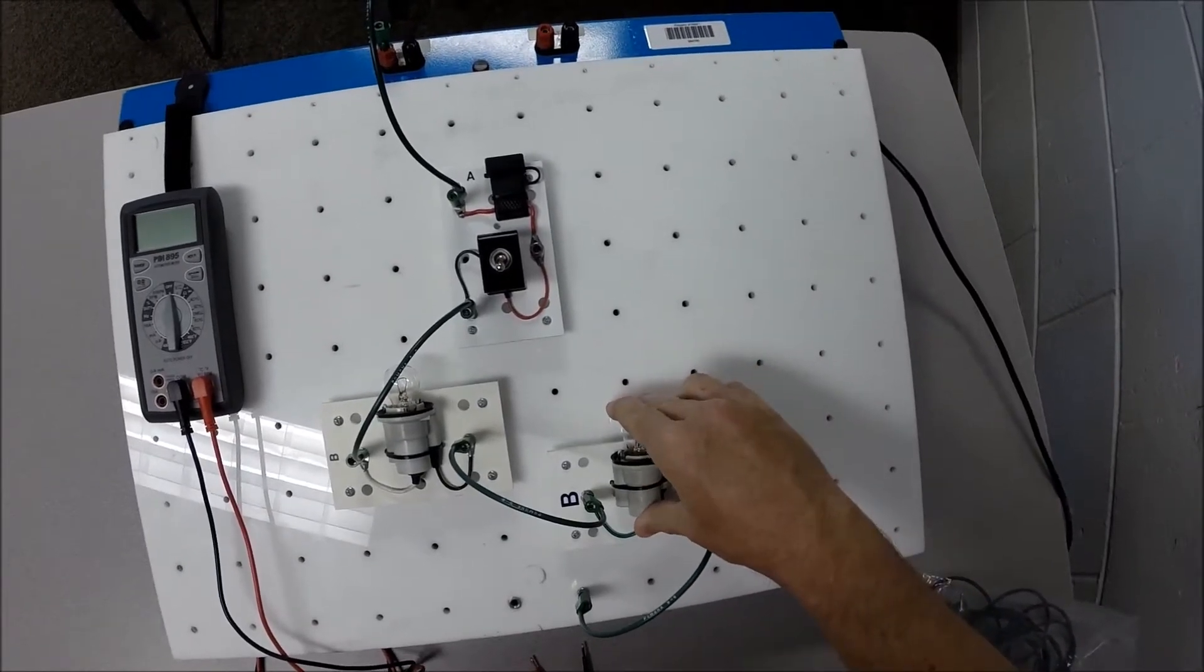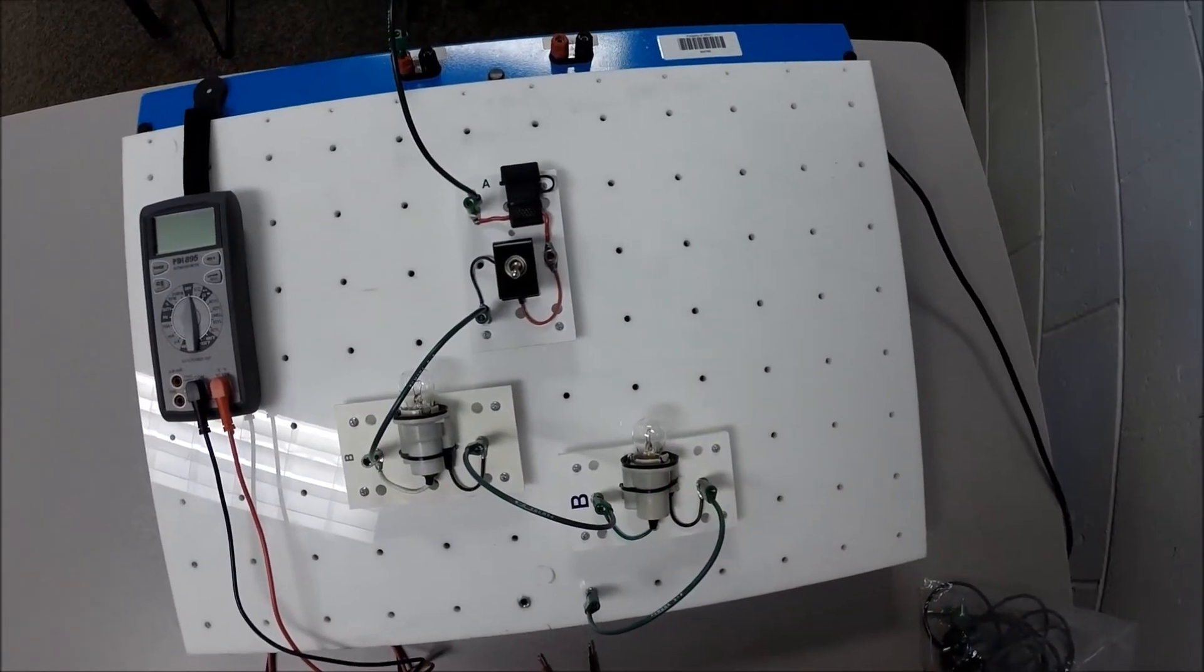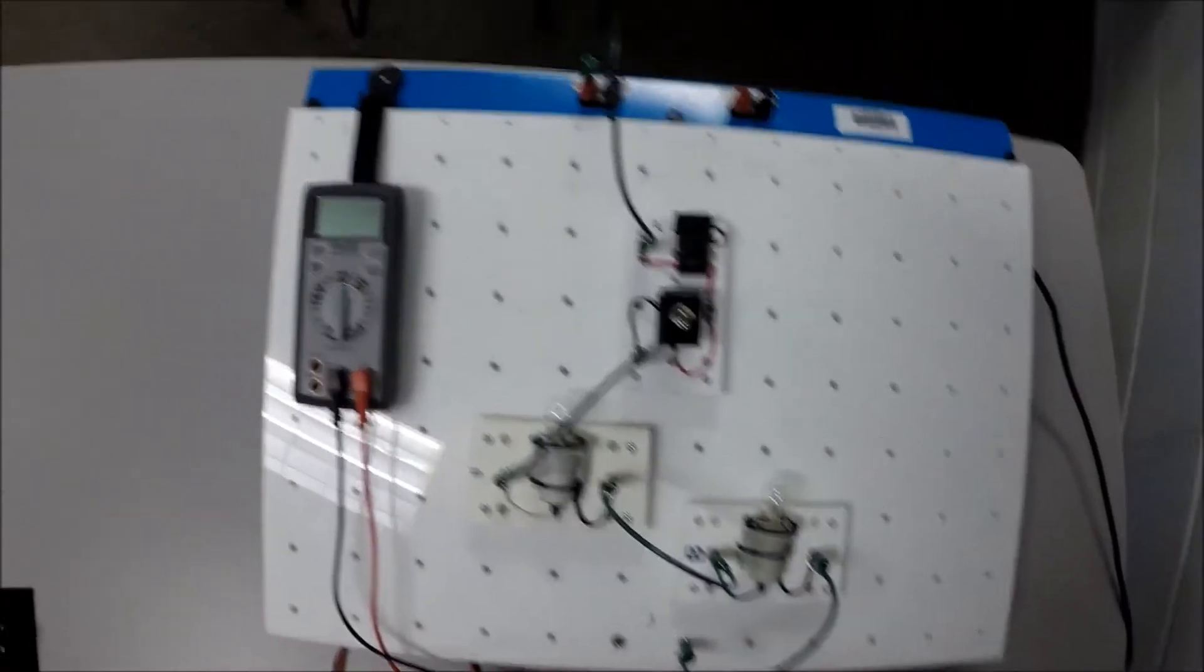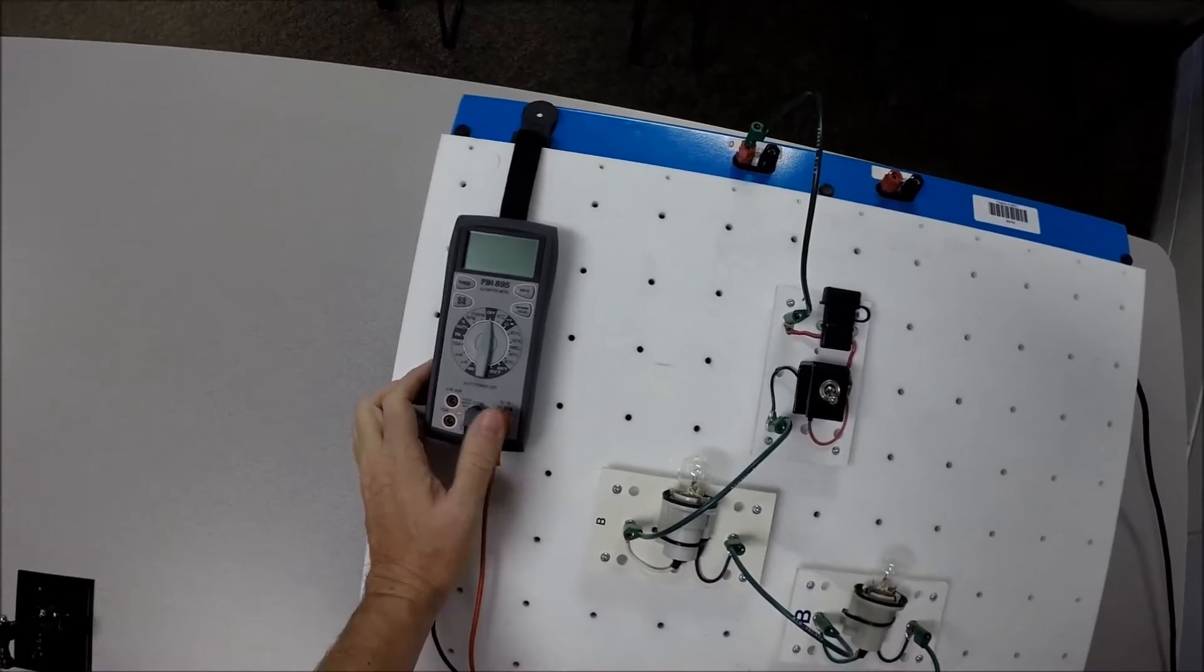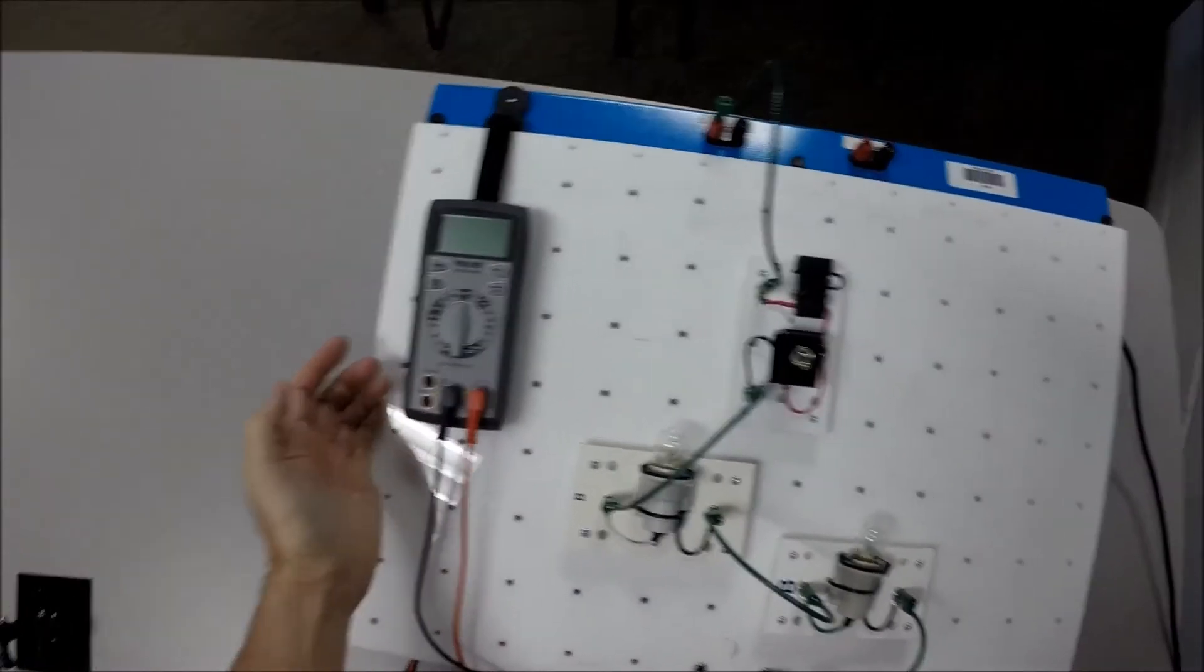We want to measure current in this circuit. So, let's measure current. Now, we have our DVOM over here that is capable of reading current. So, how do we do that?